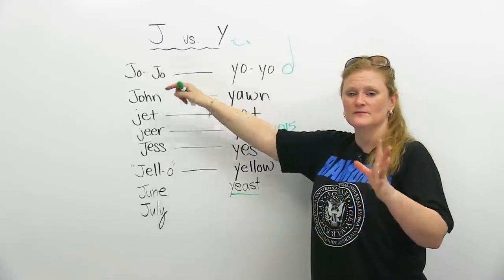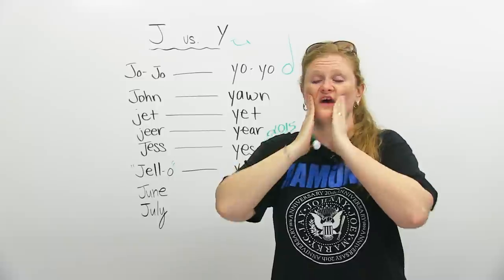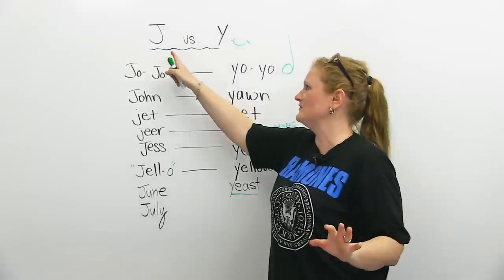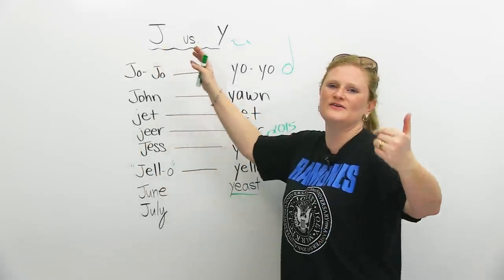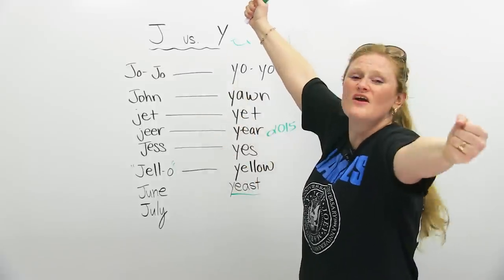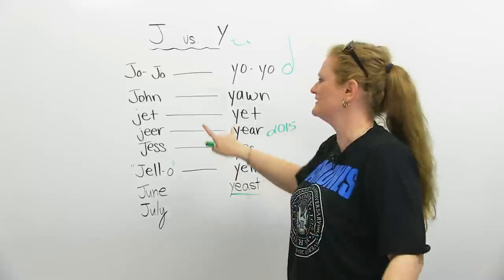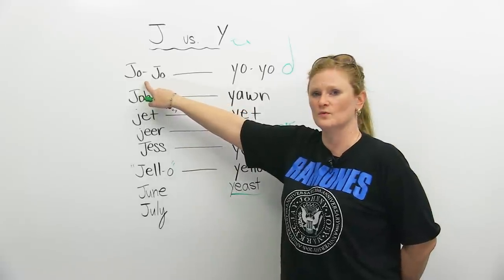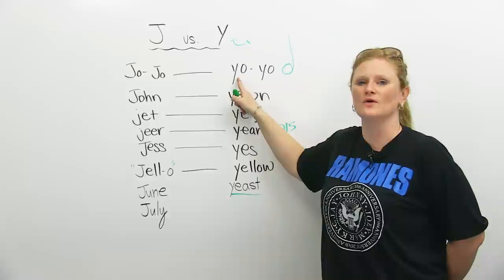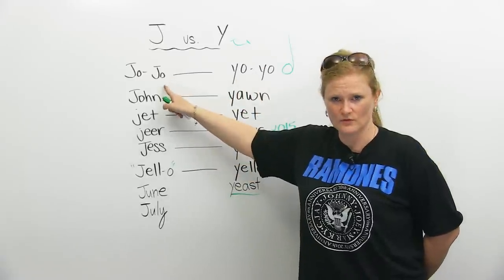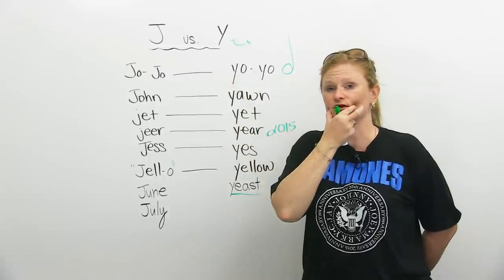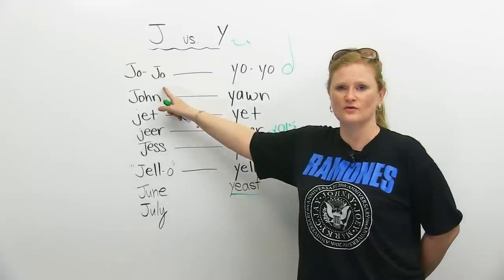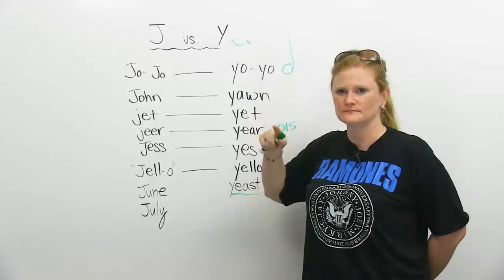The next thing — and probably the most challenging thing — is comparing the two sounds. It's fine and dandy if you can just say the J's and then the Y's separately. You will only get it if we do this now. Please follow along. The J is 'Jojo', the Y is 'yo-yo'. Please repeat: Jojo, yo-yo. Make sure that your mouth is really tight for the Y's — tight mouth for the Y's. Jojo, yo-yo. Your turn.